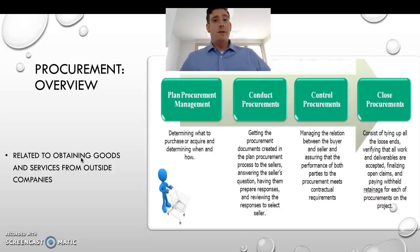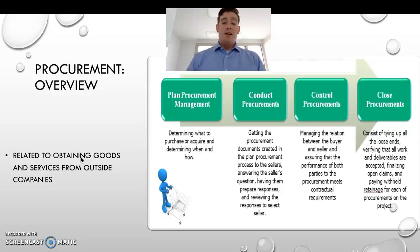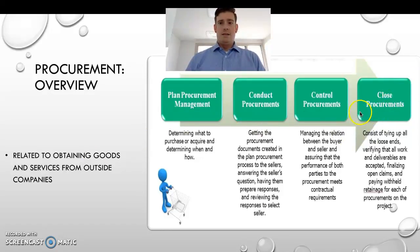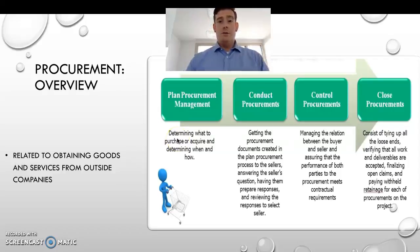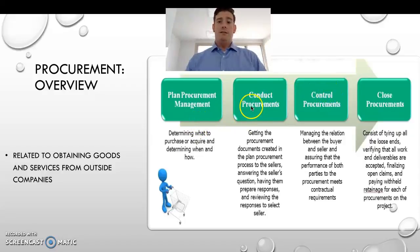You have plan procurement, conduct procurement, and then control procurement. There is also a fourth phase - close procurements - which you can categorize as closing out every aspect of the different processes within project management. In planning, you have to determine what to purchase, and determine when and how.